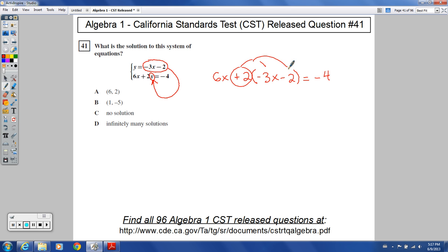So, I'm going to take this positive 2, distribute that through. I've got 6x minus 6x minus 4 equals negative 4. And so, what happens here? Well, the 6x negative 6x will cancel. I'll get negative 4 equals negative 4.